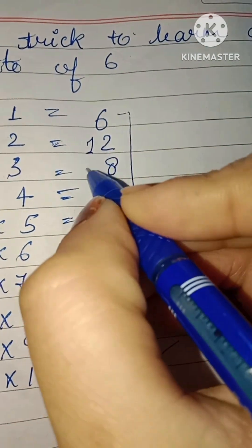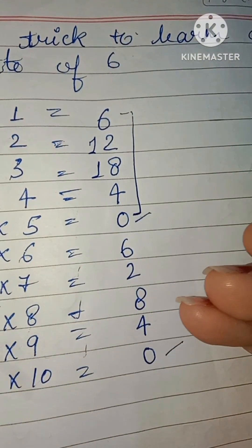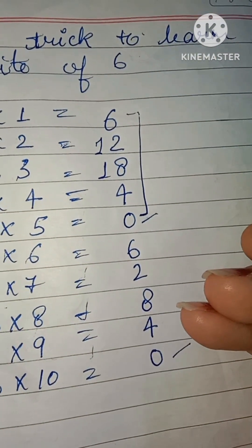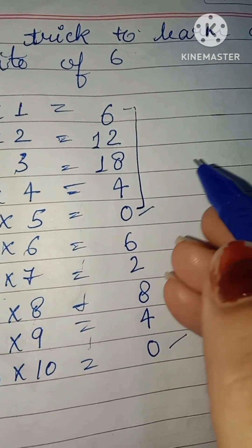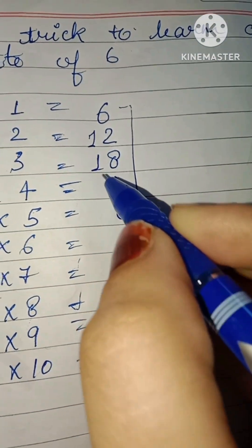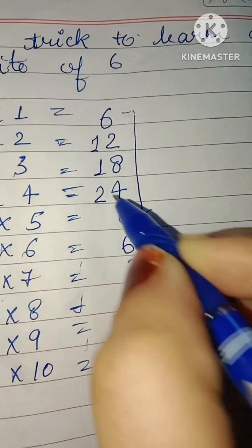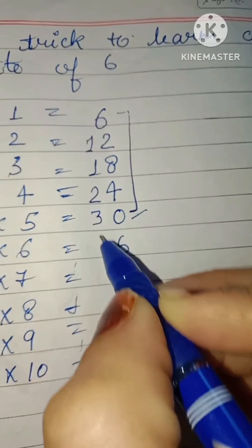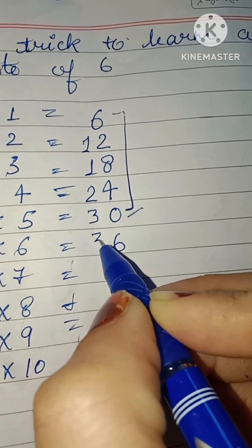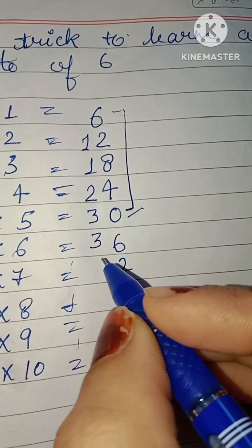In front of two you have to write one. In front of eight, one — two times you write one. One time you write two. Then two times you write three. Then two times four.